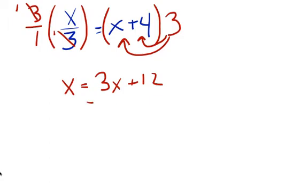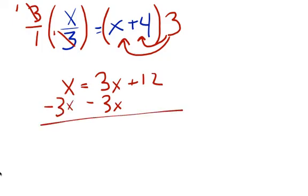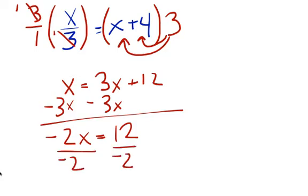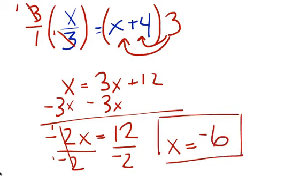So now I'm going to take away my 3x from this side and my 3x from that side. That leaves me with negative 2x equals 12. And I'm going to divide by negative 2. These cancel out to give 1, and x is going to be 12 divided by negative 2, which is negative 6. So that's our answer for this one.